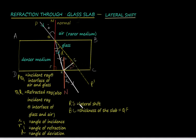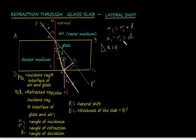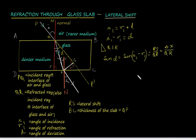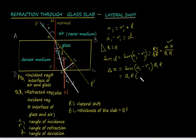From the picture we can understand that i1 equals r1 plus d, so i1 minus r1 equals d. Taking the right-angle triangle QSR, the angle d equals i1 minus r1, and sin(d) equals RS divided by QR. RS is the lateral shift, represented as delta-x, divided by QR. From this we can write delta-x equals QR times sin(i1 minus r1).